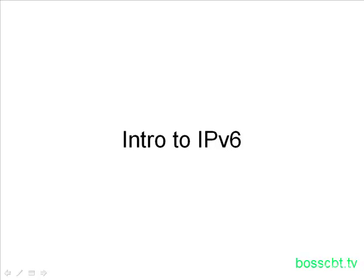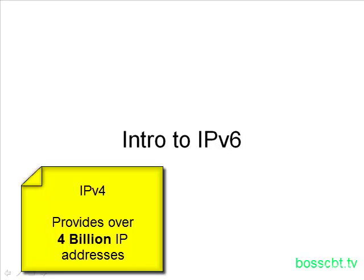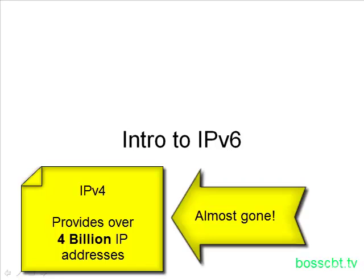Now why do we have a new version, IP version 6? Well, quite simply, IP version 4, even though it provided a little more than 4 billion IP addresses, is nearly exhausted. All of those IPs have almost been allocated. So quite simply, we've run out of room.